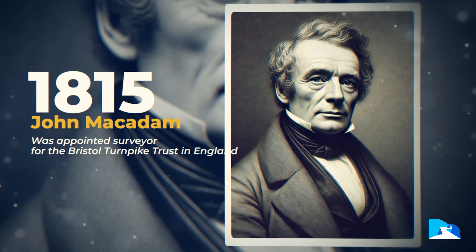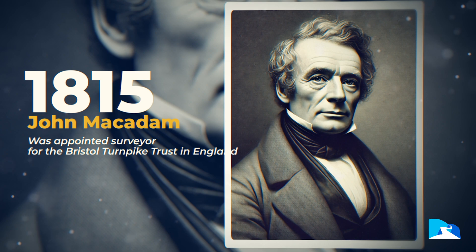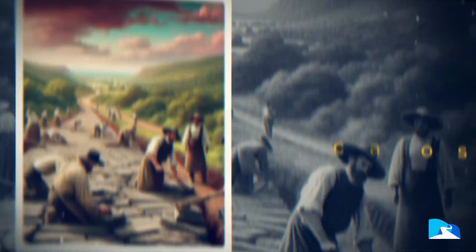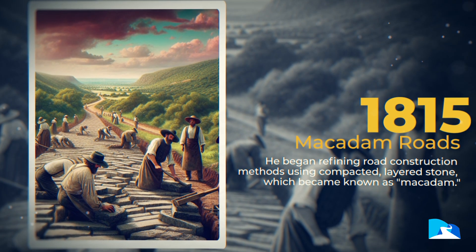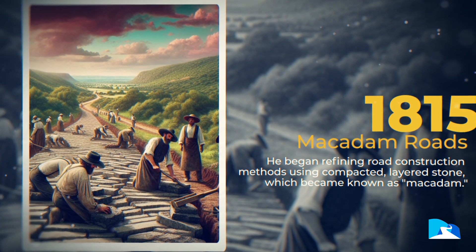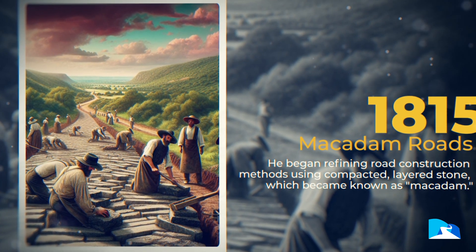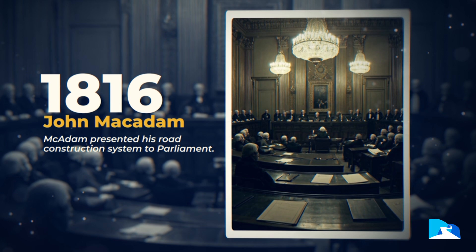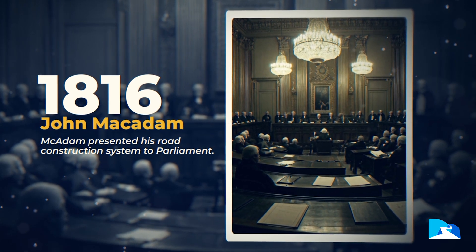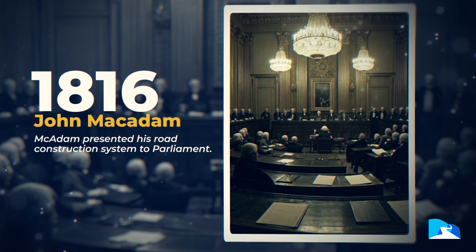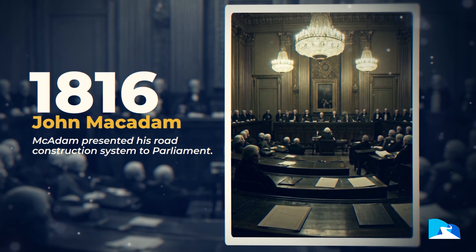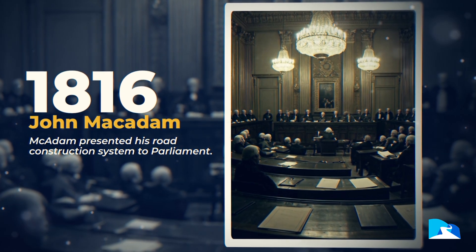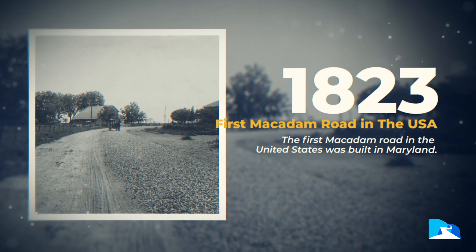This was revolutionary. In 1815, John McAdam was appointed surveyor for the Bristol Turnpike Trust in England. He began refining these construction methods, using compaction and layering — what we now know as macadam. In 1816 McAdam presented this to parliament, and by 1820 it was adopted throughout Britain. By 1823 the US built its first macadam road in Maryland.